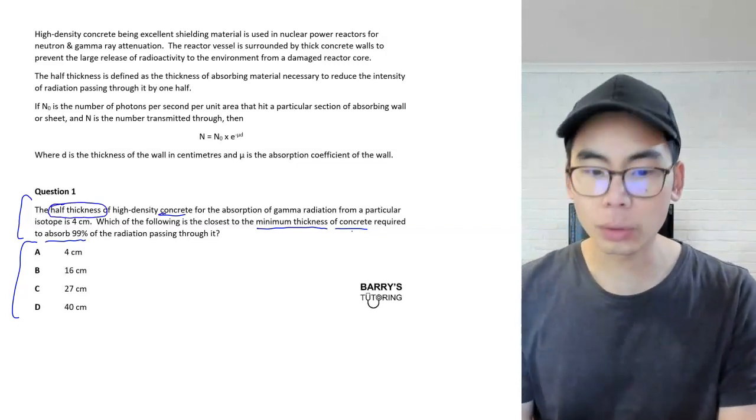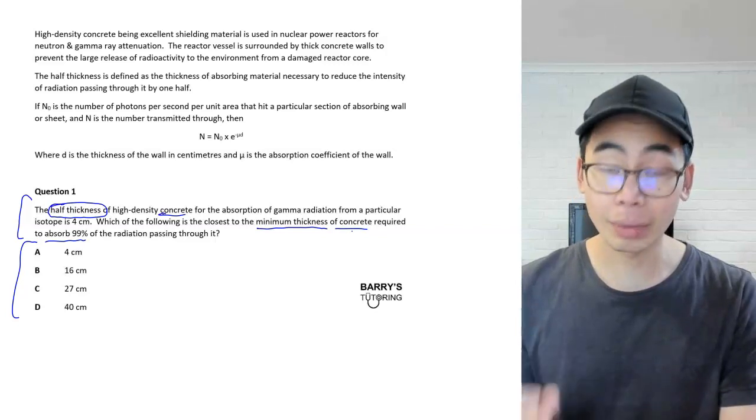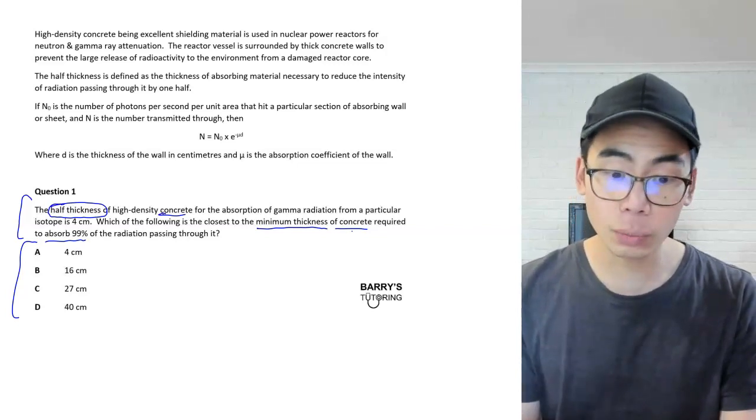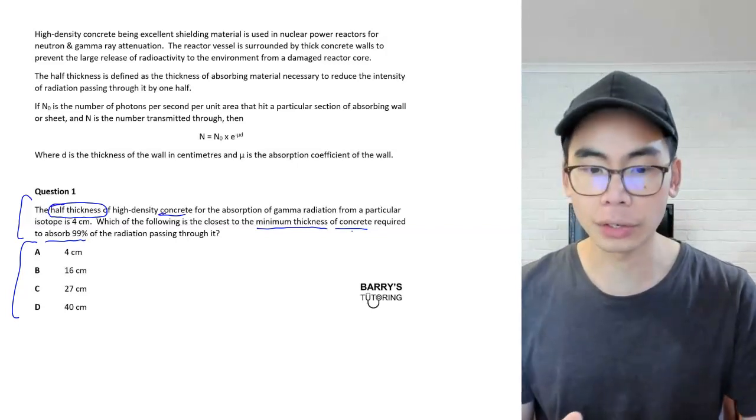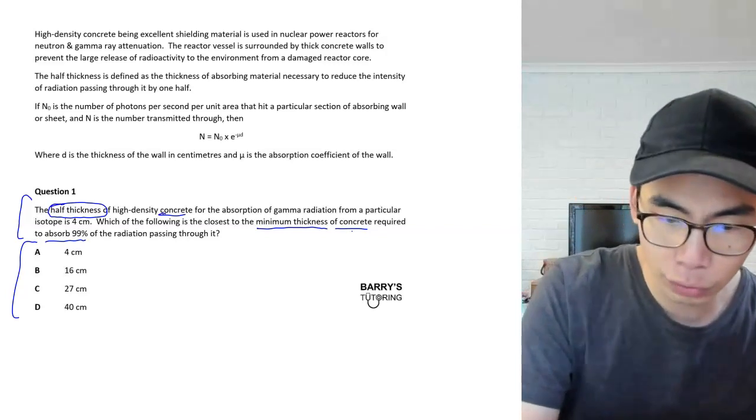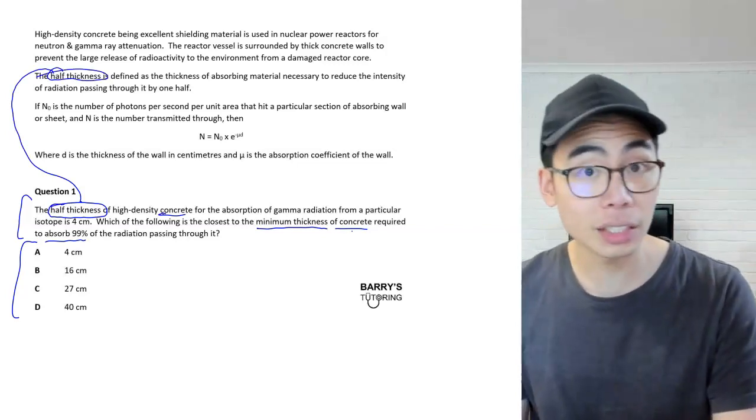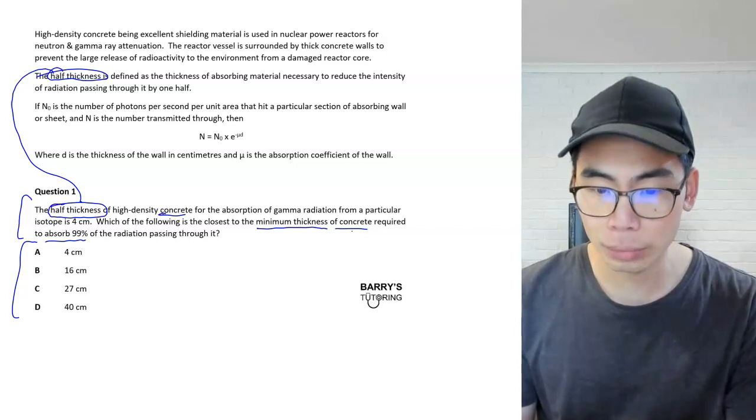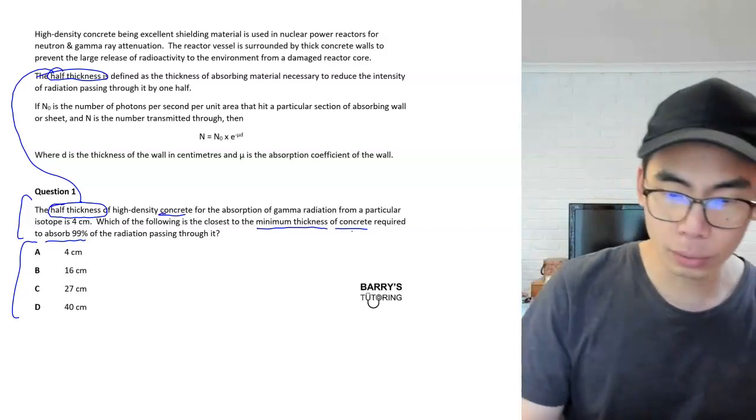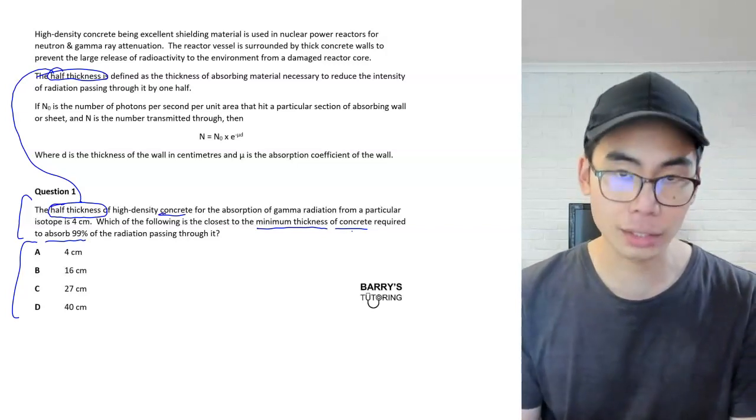Now, most people would not know what the half thickness is. This is where I like to tell people to follow keywords and make sure you understand what they are because often they will define it in the stimulus. And by following keywords, you're also being more efficient. You're looking for something in particular in the stimulus rather than just passively reading. So if we go and we look for the word half thickness, we can see that half thickness is defined as the thickness of absorbing material necessary to reduce the intensity of radiation passing through it by one half.